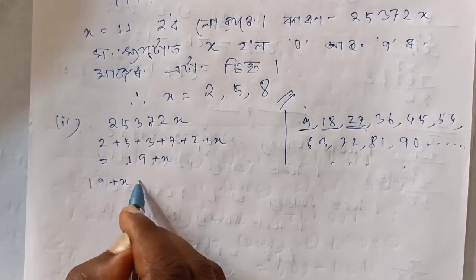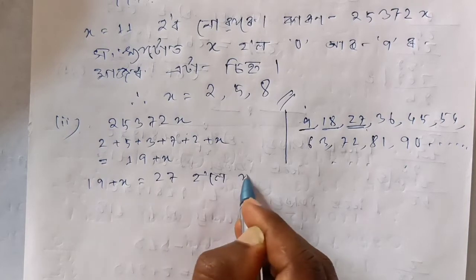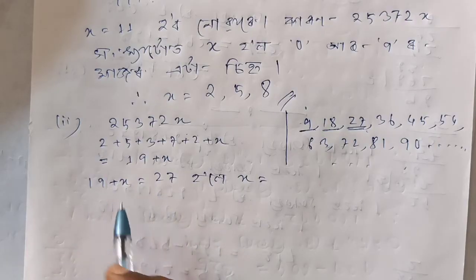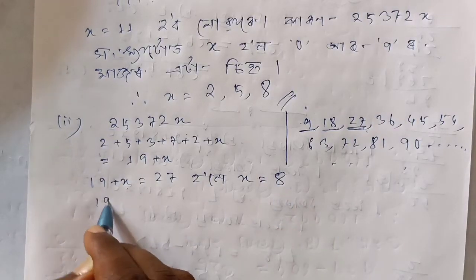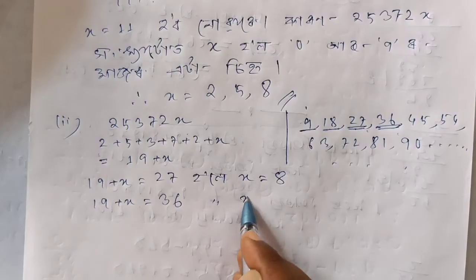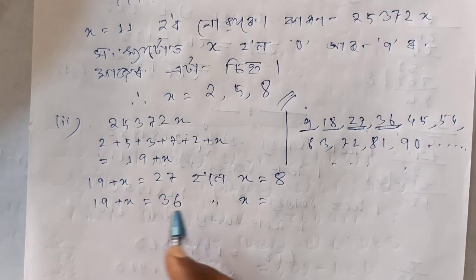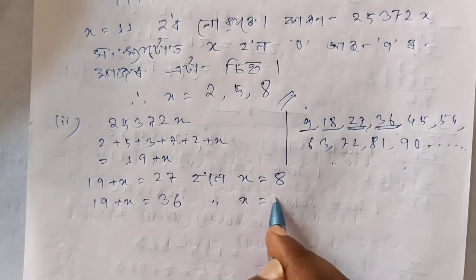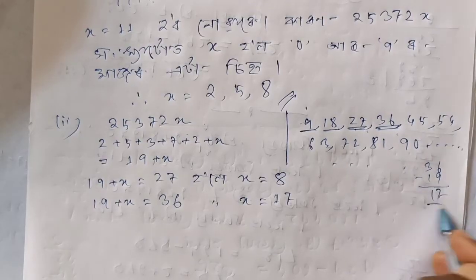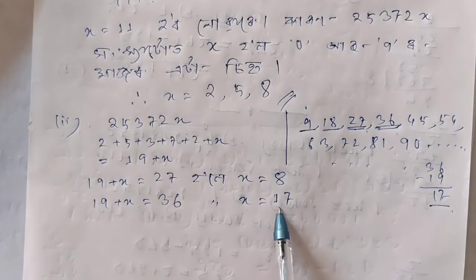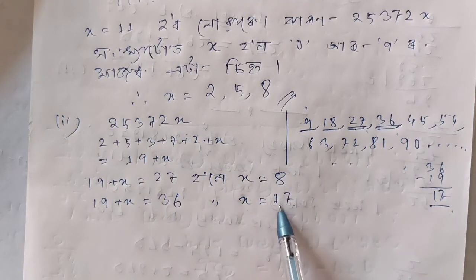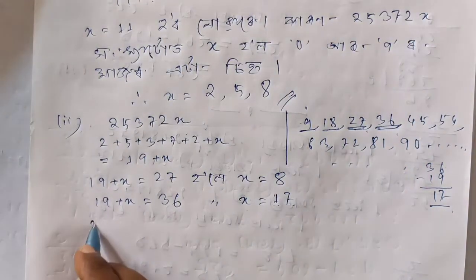19 plus x is equal to 27. 27 is equal to x, x is equal to 8. Next, 19 plus x is equal to 27. 36 is equal to 36, 36 is equal to the maximum. X is equal to 17.